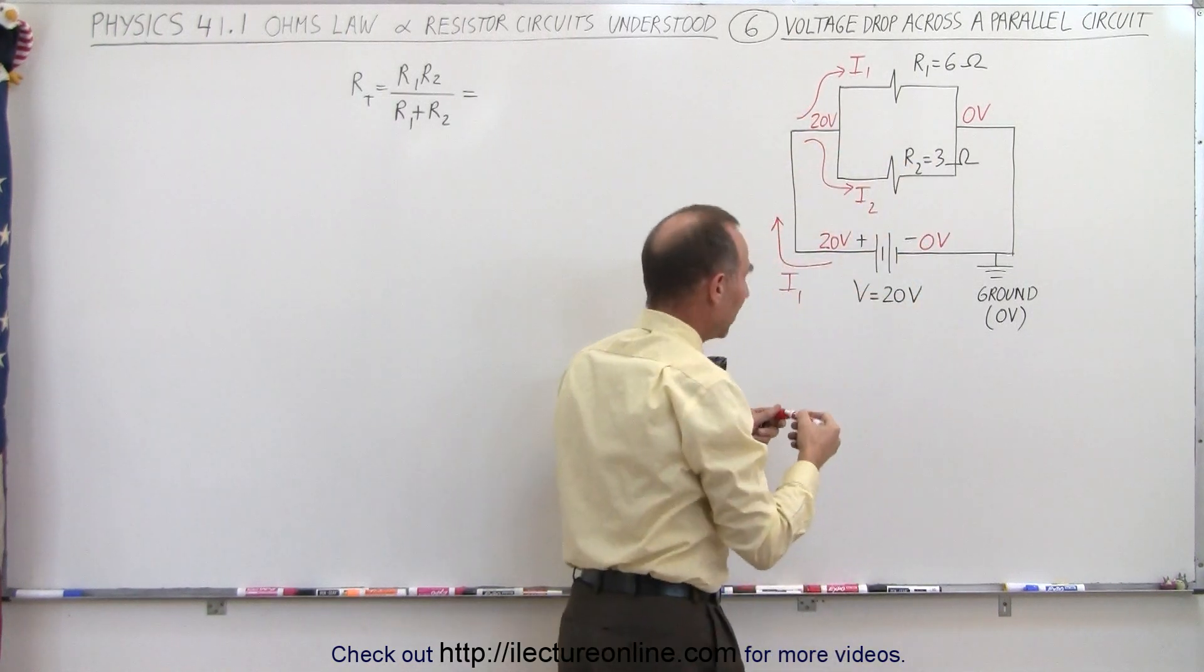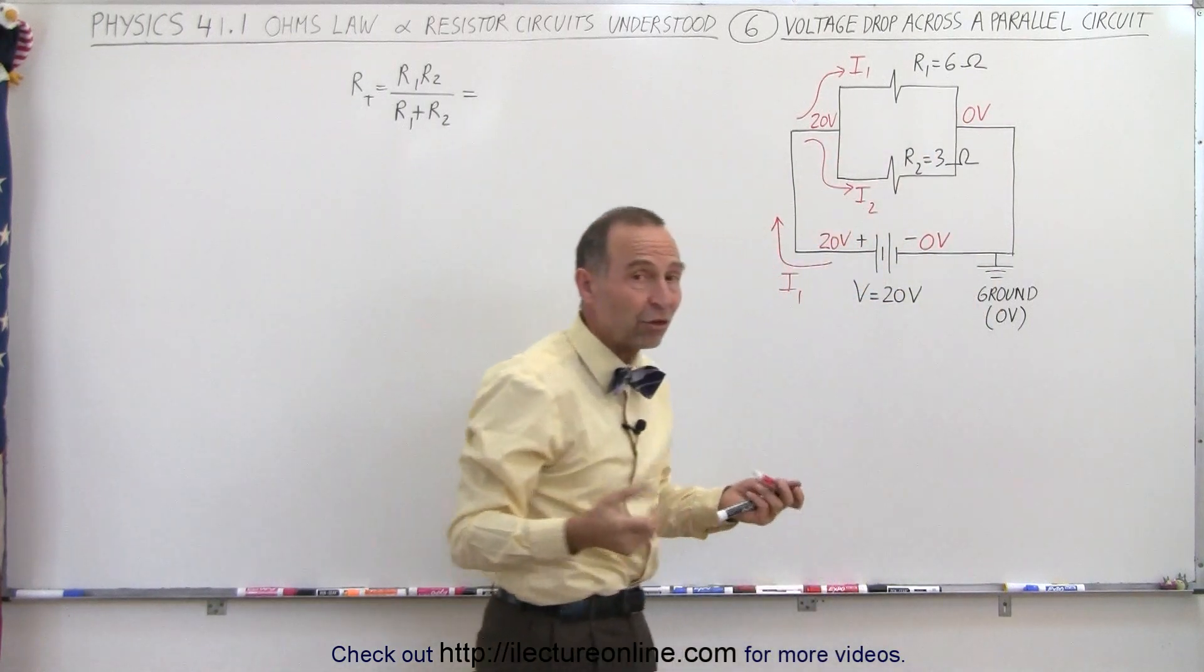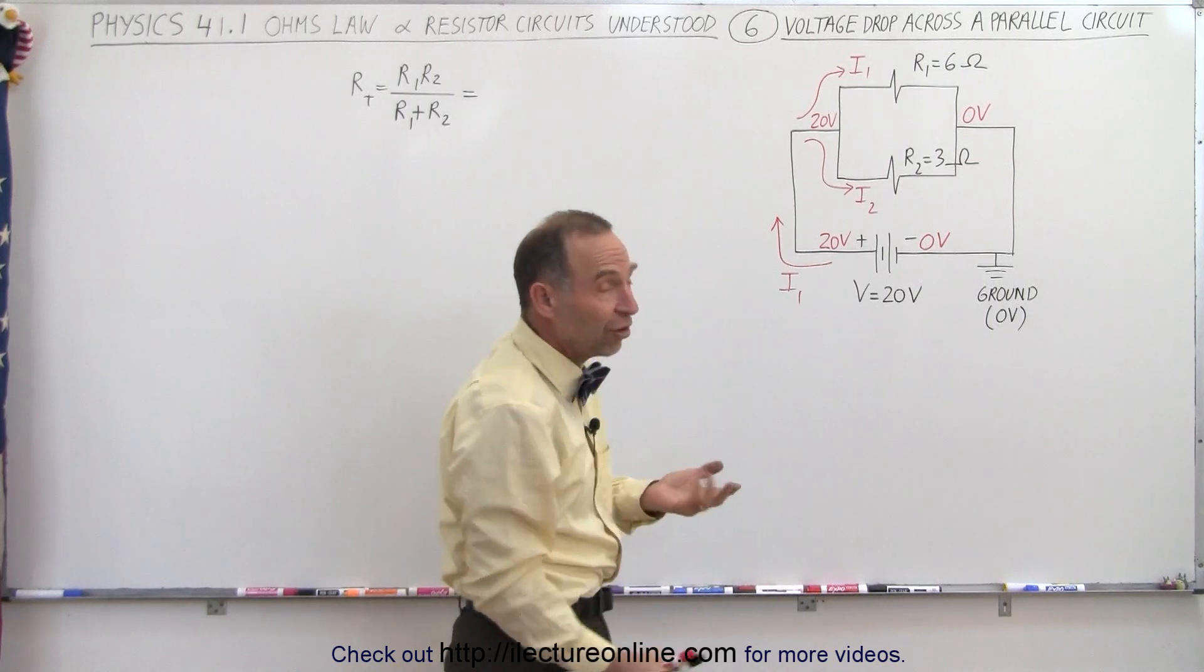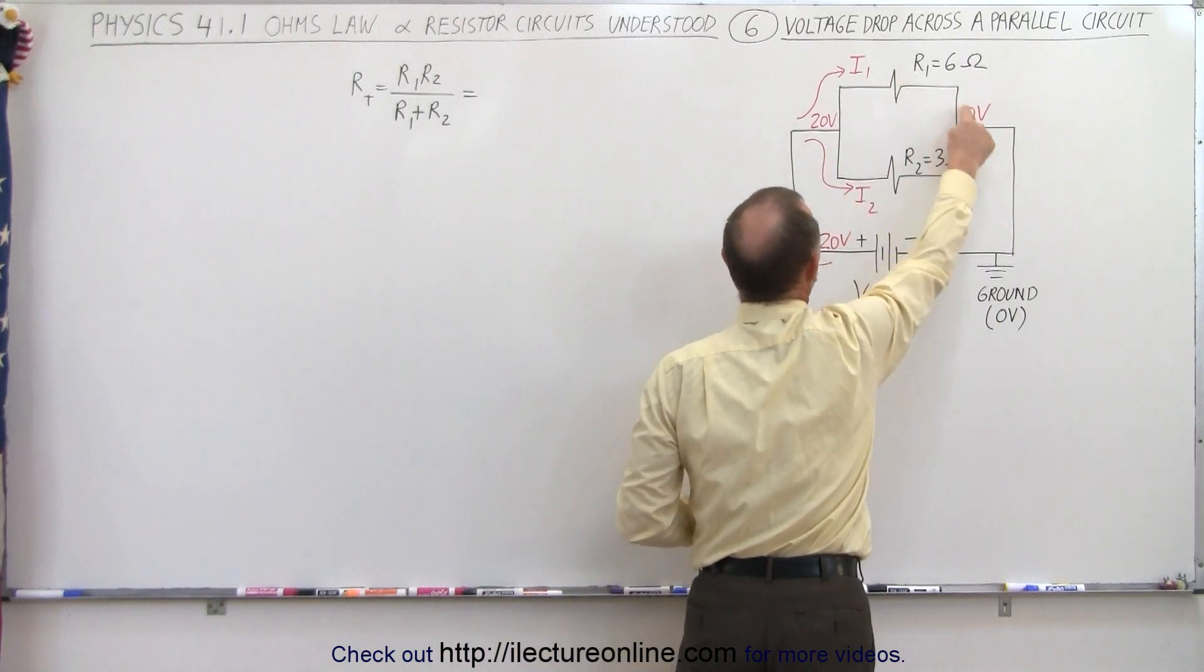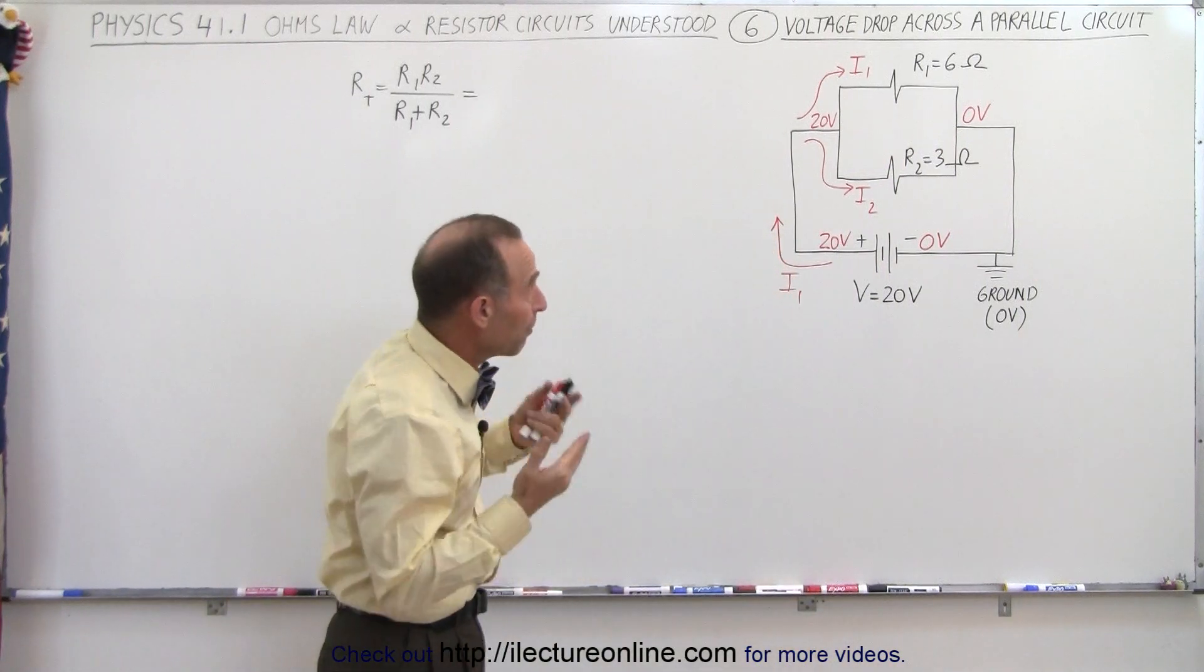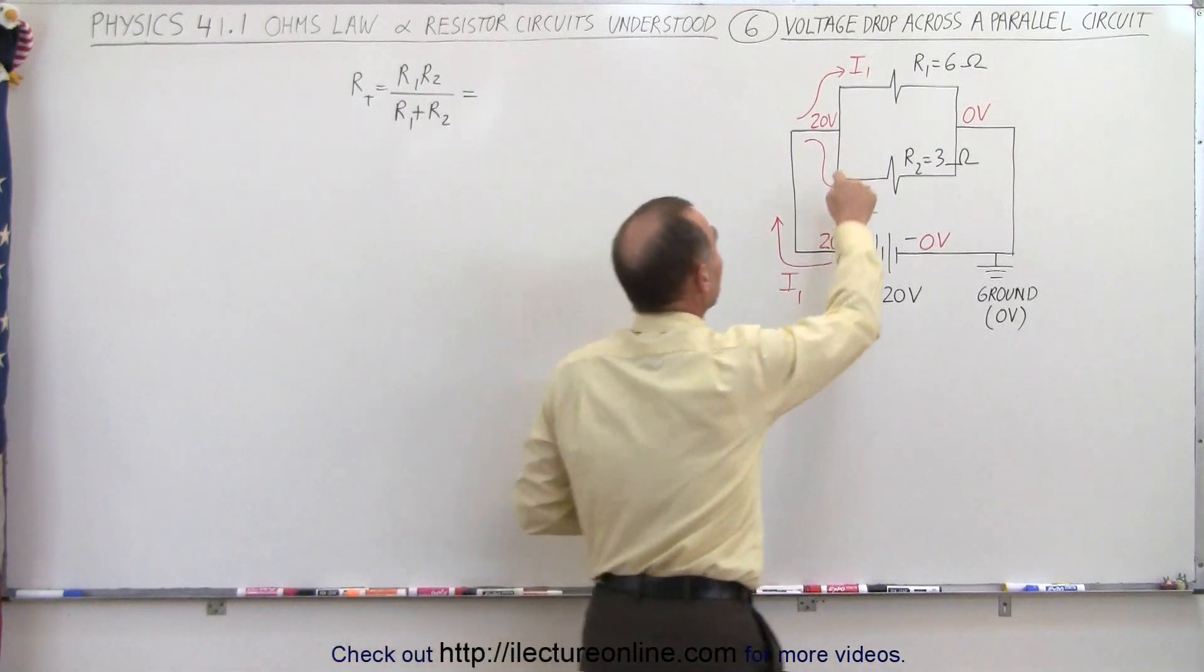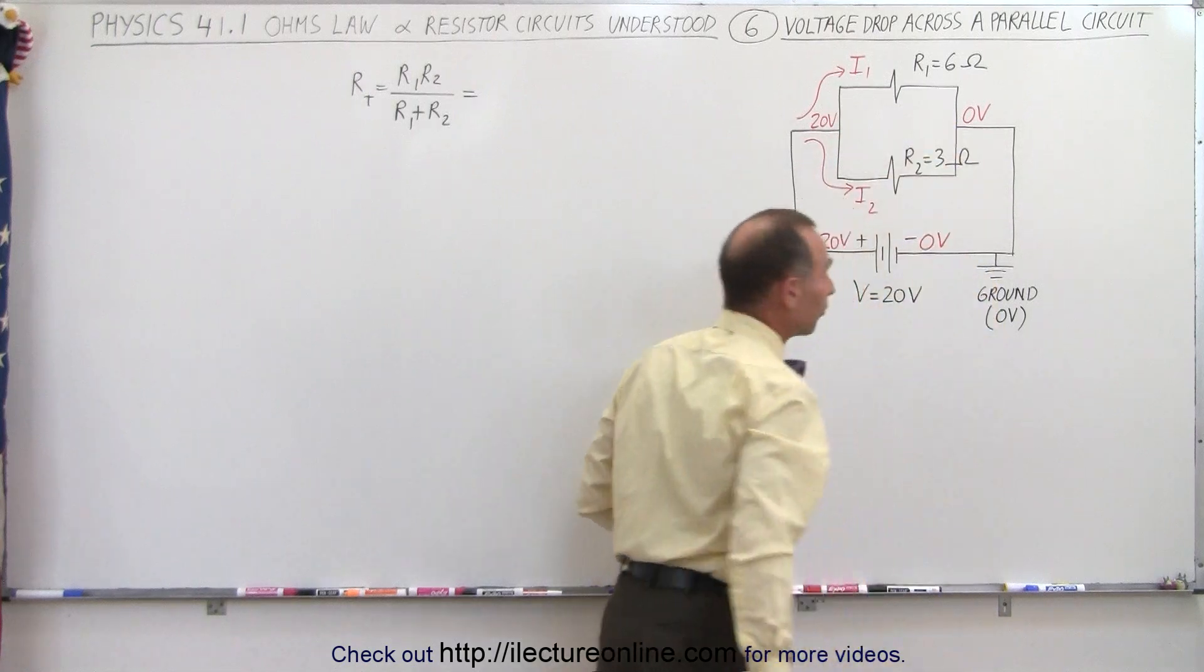Now if you take a look at this, if it's 20 volts on the left side and 20 volts on the right side, that means there's a 20-volt potential difference between those two points in the circuit. And since there's two paths to go from here to there, we have a path over here to resistor R1 and a path down here to resistor R2, that means the voltage drop must be the same across either resistor, because somehow the voltage drop has to be the same no matter which path you take from 20 volts to 0 volts.